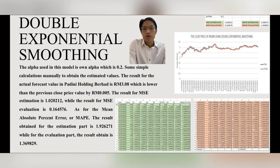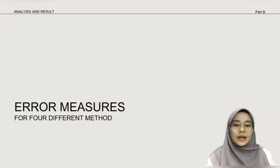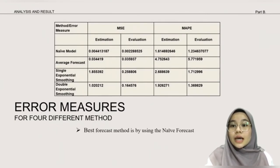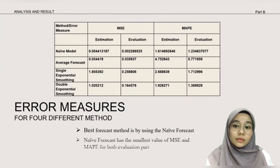The error measures. Based on the table above, the best forecast method is by using the naive forecast. This is because between the three other models, naive forecast has the smallest value of MSE and MAPE for both evaluation parts.